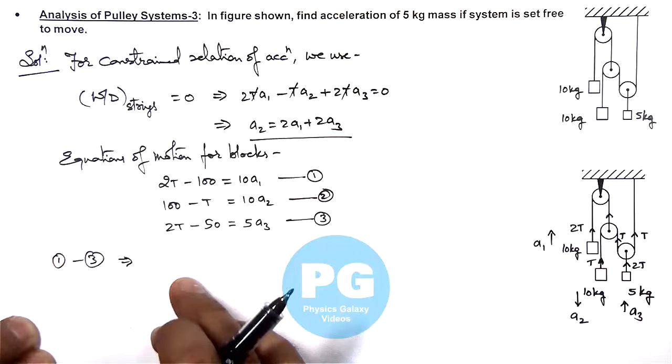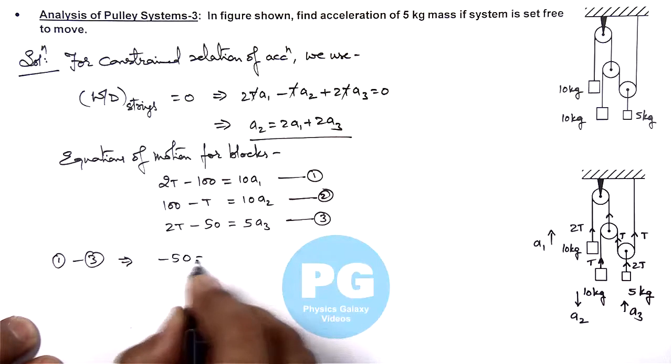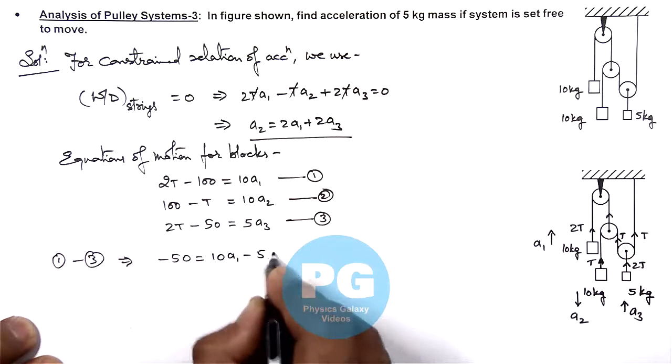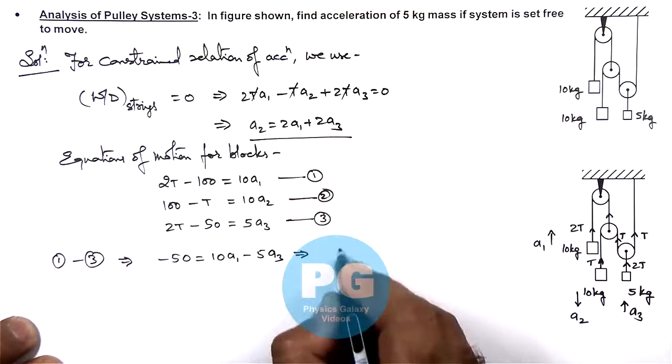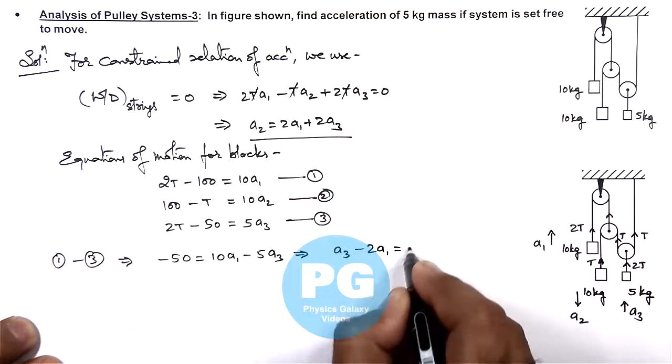Here 1 minus 3 will be resulting as minus 50 is equal to this 10 a1 minus 5 a3, which further simplifying is giving us a3 minus 2 a1 is equal to 10.